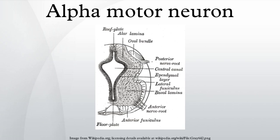For example, the biceps brachii muscle, a muscle of the arm, is innervated by alpha motor neurons in spinal cord segments C5, C6, and C7, which are found rostrally in the spinal cord. On the other hand, the gastrocnemius muscle, one of the muscles of the leg, is innervated by alpha motor neurons within segments S1 and S2, which are found caudally in the spinal cord.